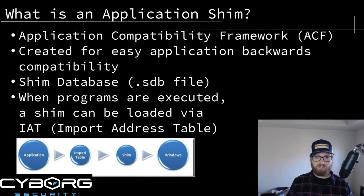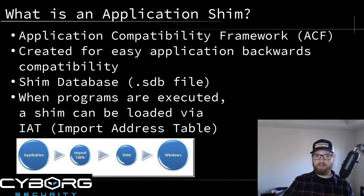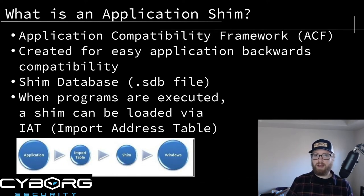Instead of digging into your code and making lots of changes, you can create an application shim. When you load that piece of software, it will load the shim along with it and make it work on a newer OS. There's something called the Application Compatibility Framework, or ACF. It's not installed by default on Windows but is made by Microsoft. It can be used to create a shim database file with the extension .SDB. When a program loads, it looks inside the Import Address Table, or IAT, for these SDB shims.